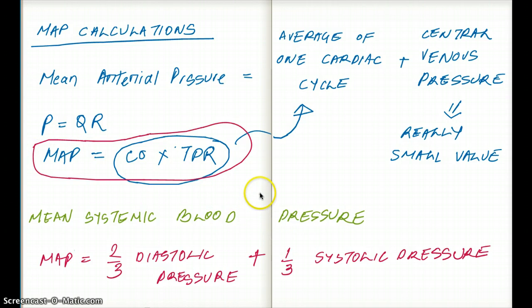What if I say how can we calculate mean systemic blood pressure? The mean systemic blood pressure is the same as one cardiac cycle plus central venous pressure, because mean is the average. The average systemic blood pressure is going to be cardiac pressure plus venous pressure, or arterial pressure plus venous pressure.